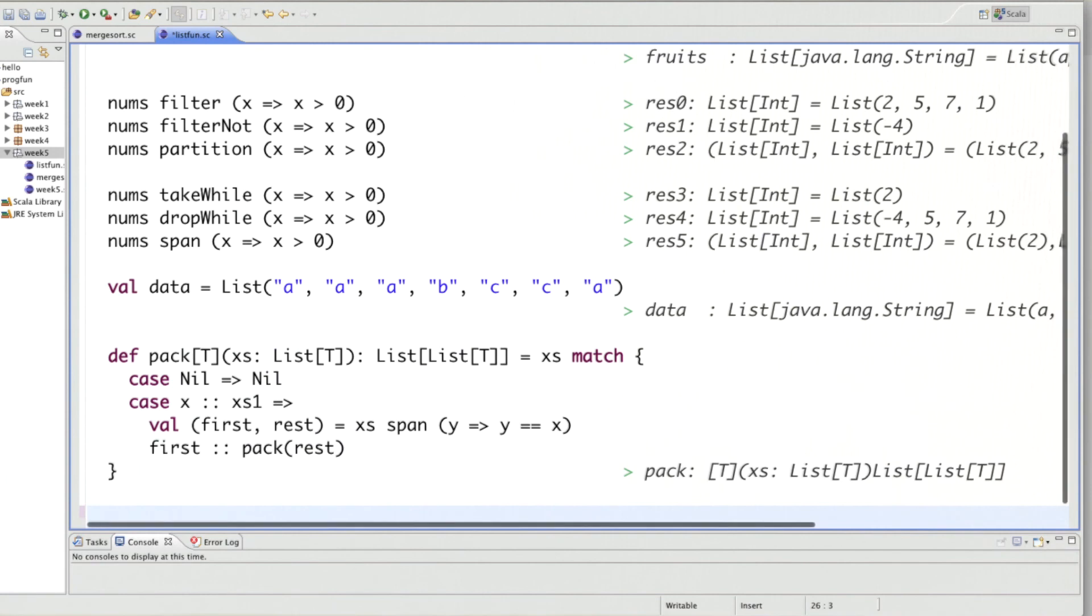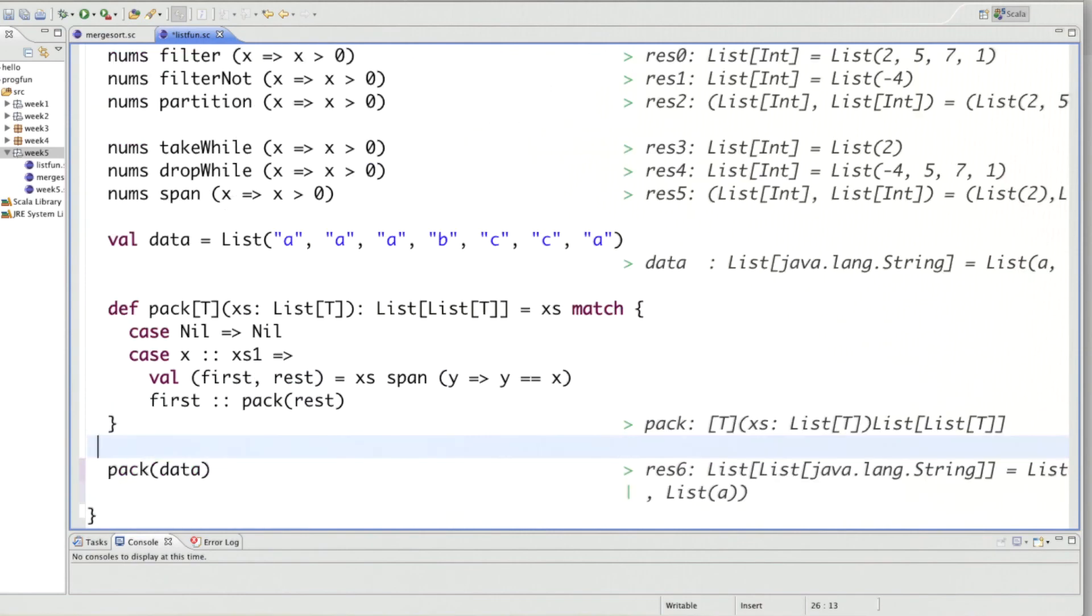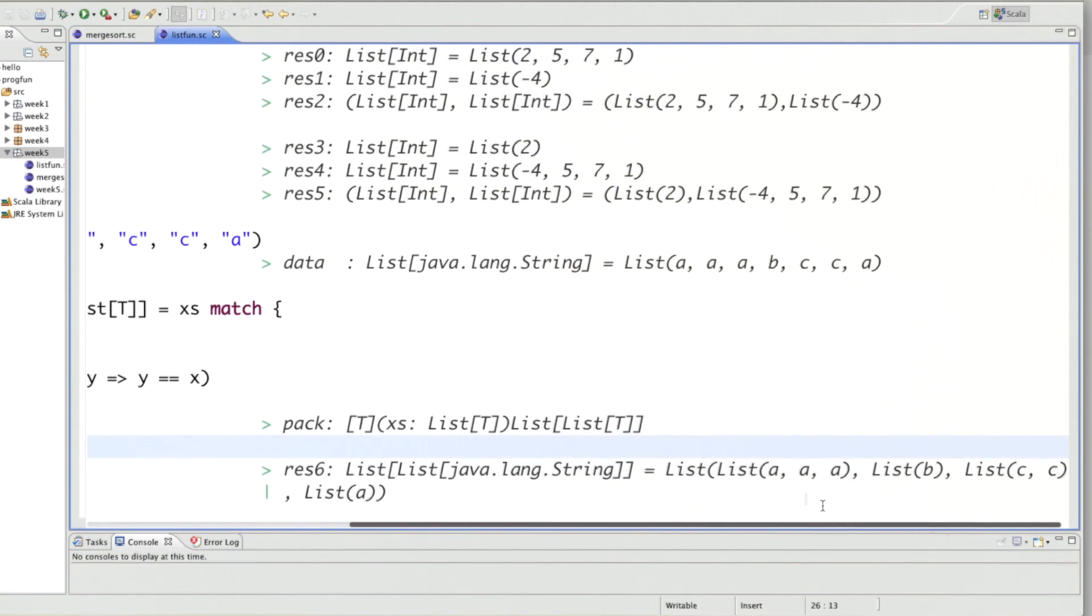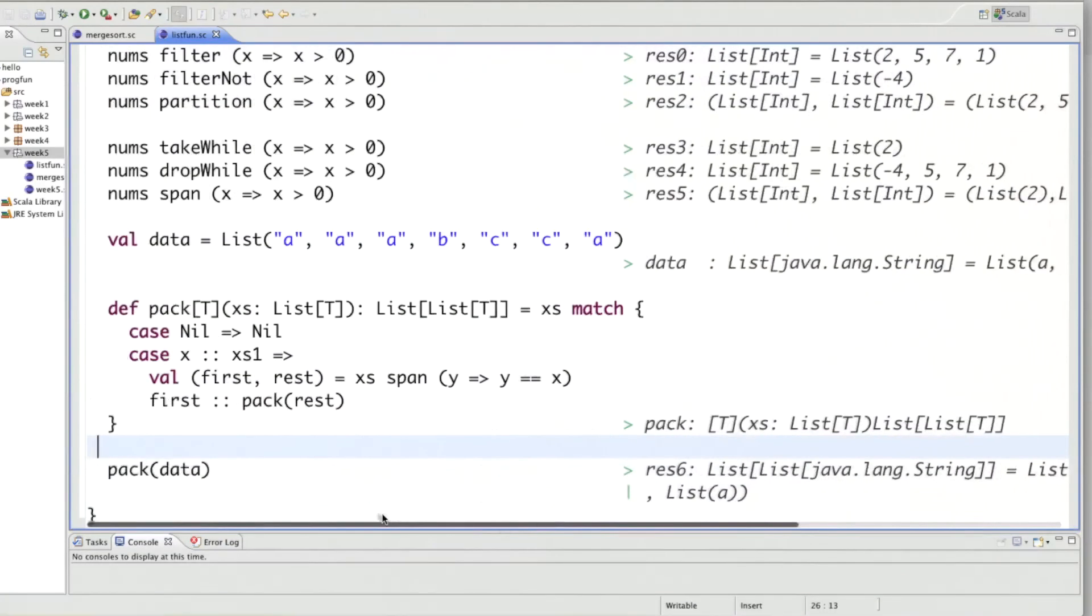And that gives us our function pack. So let's apply pack to our data list. Pack of data gives us a list consisting of three A's, one B, two C's and an A. Just what we needed.